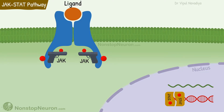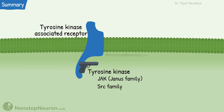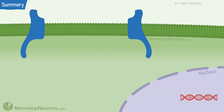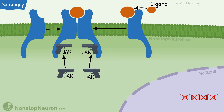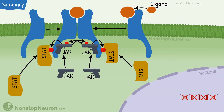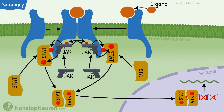So this was all about tyrosine kinase associated receptors and the JAK-STAT pathway. Let's have a quick summary. Tyrosine kinase associated receptor itself is a simple receptor molecule without enzymatic activity, but they associate with Janus or SRC family of tyrosine kinases. Under the resting state, the receptors exist as monomers. The binding of a ligand causes dimerization, recruitment of JAKs, phosphorylation of each other and phosphorylation of receptor, recruitment of STATs, its phosphorylation, dissociation and formation of dimer, entry into the nucleus, and regulation of gene expression.